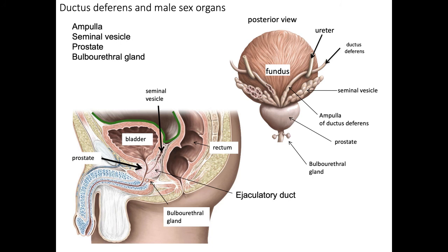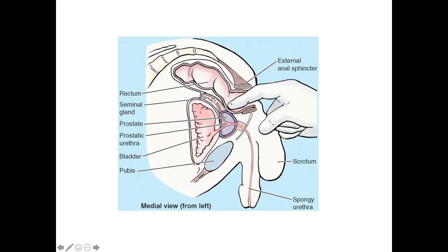Sperm is formed in the testes and travels through the ductus deferens to the ampulla. The sperm is then stored in the prostate and seminal vesicles. These accessory organs will atrophy with age. Prostate cancer is one of the most common tumors found in older men — tumors are found posterior to the prostate, and because of their location, they can be palpated during a rectal exam, which is the most effective way to identify prostate cancer.